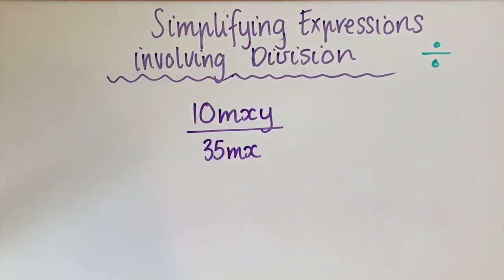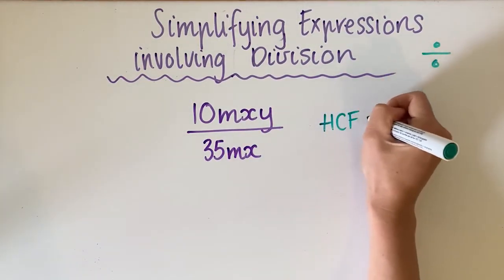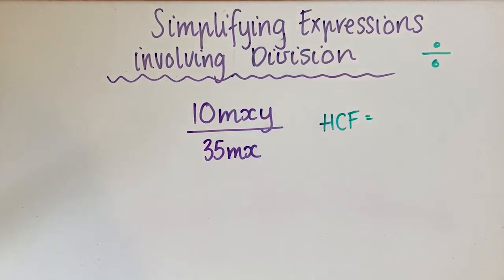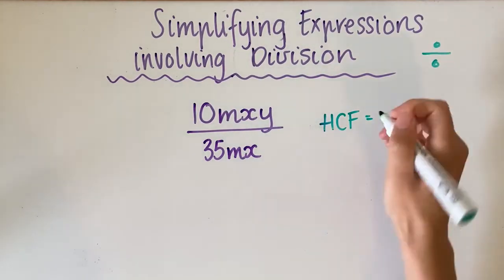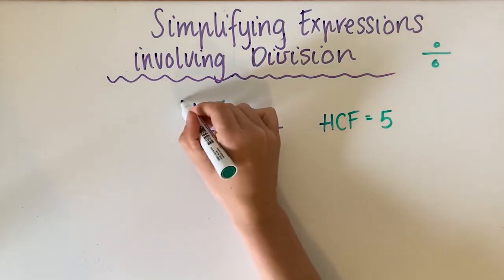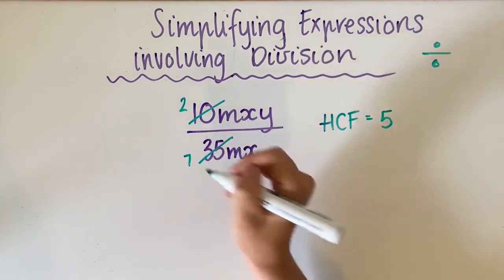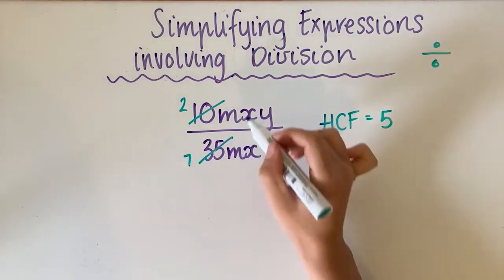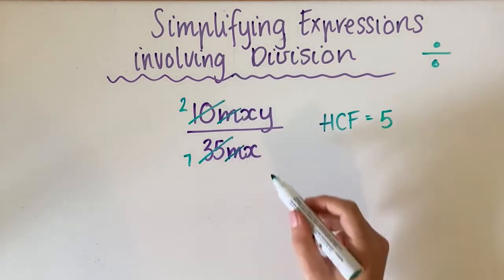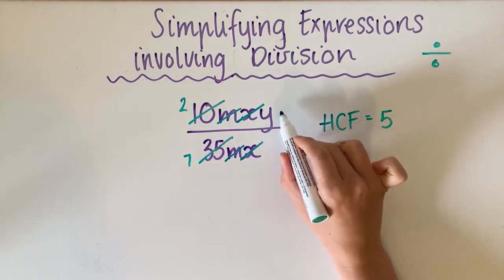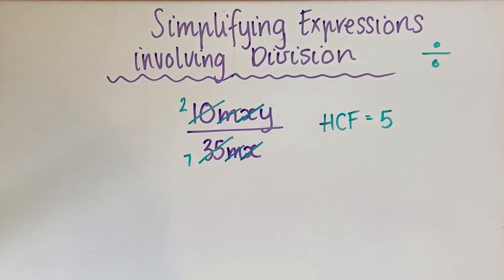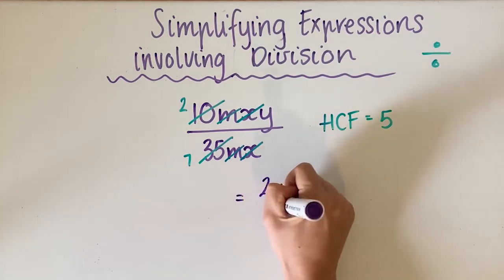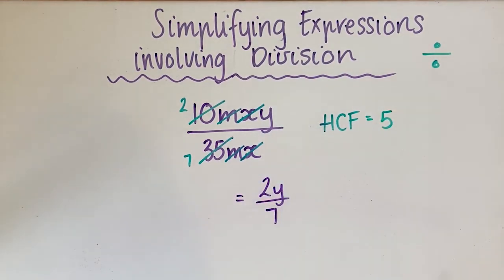For this last one we still need to find our highest common factor — the largest number that goes into 10 and 35. The biggest number that goes into 10 is 10, but that doesn't go into 35. So the next biggest number is 5, and that also goes into 35, so our highest common factor is 5. 5 goes into 10 two times, and 5 goes into 35 seven times. Now we look at our letters: there's an m on the top and bottom so I can cross them out; there's an x on the top and bottom so I can cross them out; but there's a y on the top and no y on the bottom, so I can't cancel that out. So what I'm left with is 2y over 7, and I can't simplify that any further. That is how you simplify expressions involving division.